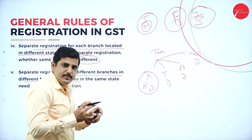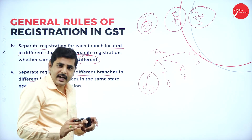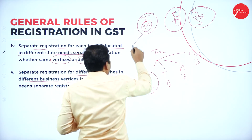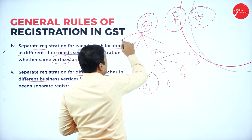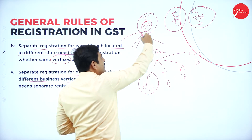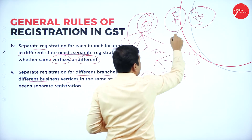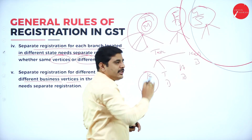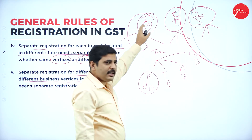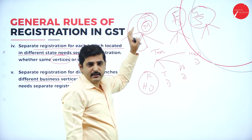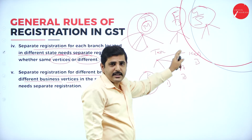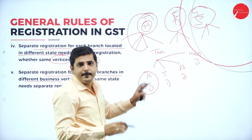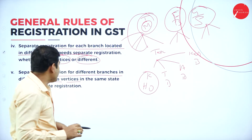Even though it is the same state, if I have different branches of the same business - for example textile branches in Mysore, Mangalore, and Karnataka - that is considered the same person. But for finance business, different branches within Karnataka are considered within that registration. If a branch is outside Karnataka, then I need to get a different registration.